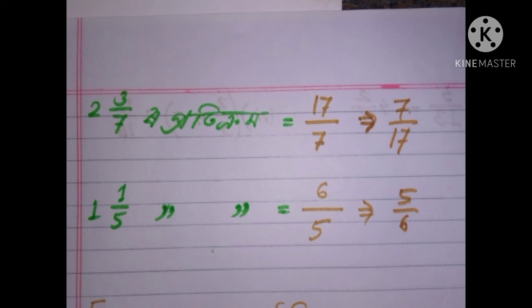We must pass on to 7. Our 5. We must pass on to 5. 1. 6. 5. 5. 6. 5.